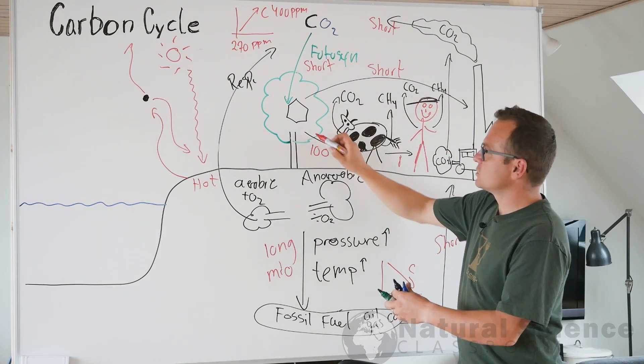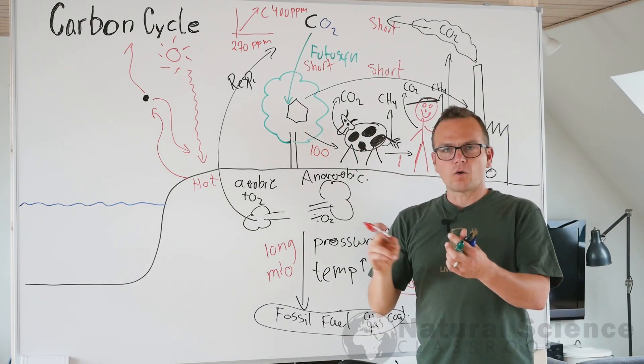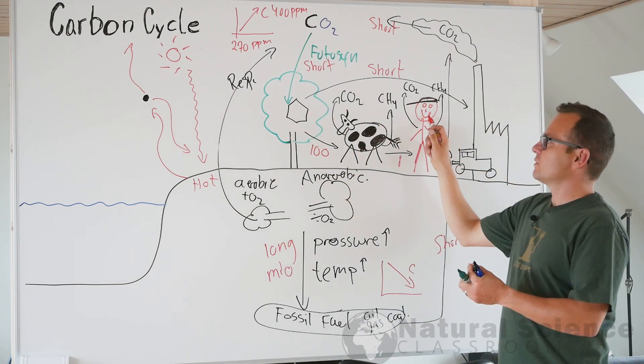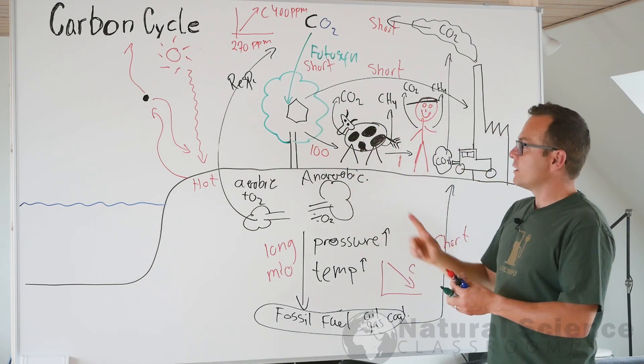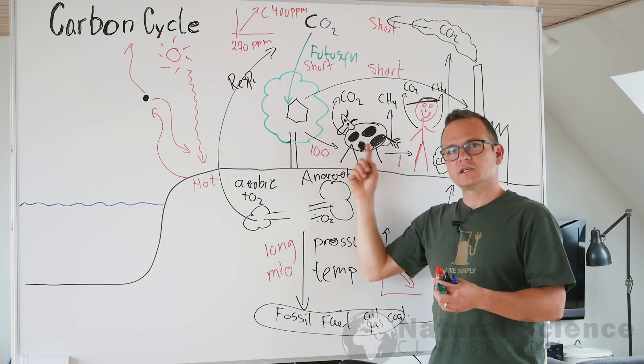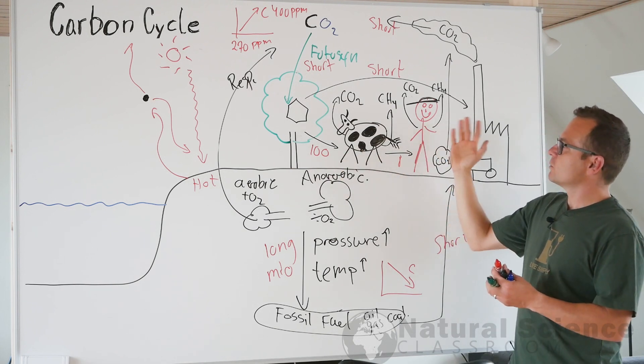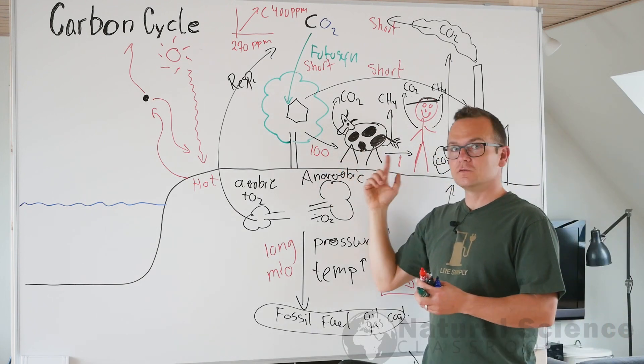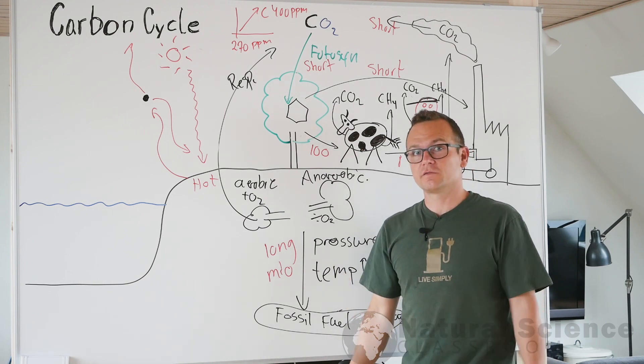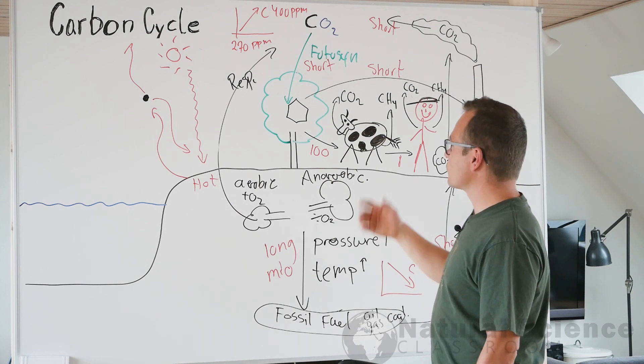So what we could do was just to give the corn and the soybeans and all the vegetables, give it directly to the man. Because if we did that, then we wouldn't have this food chain problem and this loss of energy. Then we would produce 100 times more food for the human population. So that would really solve the food supply problem for the growing population.